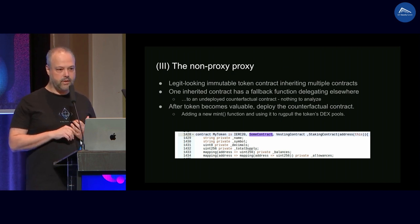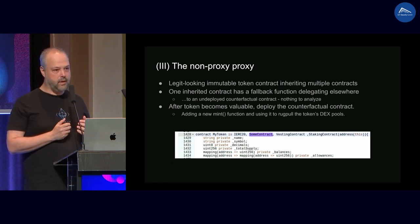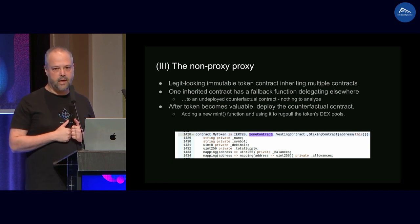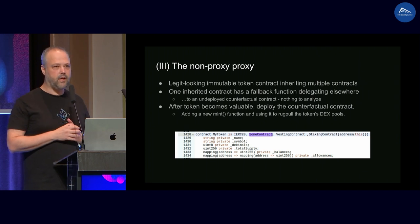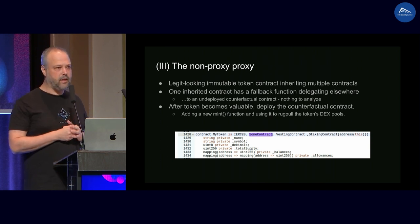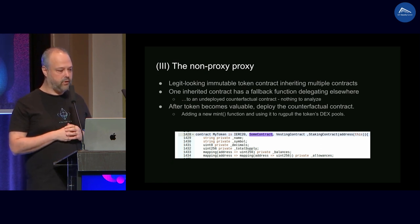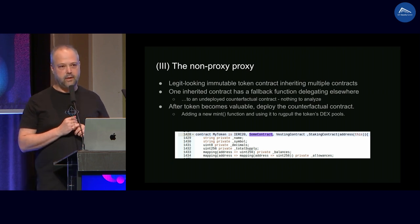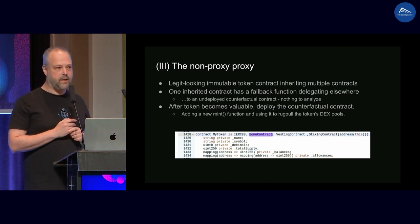A more interesting version is what I call the non-proxy proxy. It's a contract that seems immutable — you don't think of it as a proxy. It can be some ERC20 token or something. It inherits from multiple contracts, each of which can inherit from more, creating a complex inheritance tree. Somewhere deep inside this tree you can have a hidden fallback function that delegates to some other address, making the entire contract effectively a proxy for unimplemented functions. At deployment, you can make it counterfactual — there is nothing at the delegated address, so calls outside the ABI will revert as Solidity normally does when calling an address with no code.